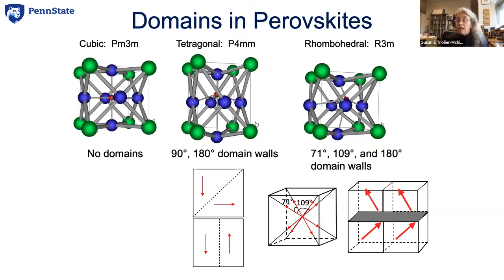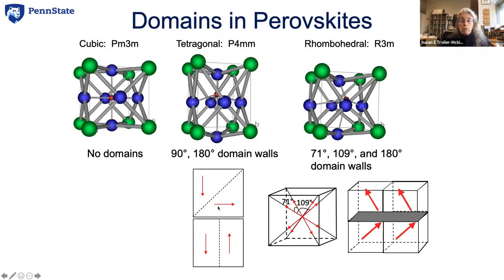In the case of magnets, there are domains with north and south poles. Here we say that the polarization is pointed in the same direction as the displacement of the positive charges. I can have both domains — one where all the titanium atoms are displaced in a down direction, and one where they're all displaced off to the right. The boundary between them is what we call a domain wall.